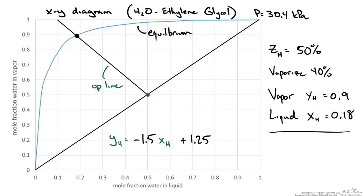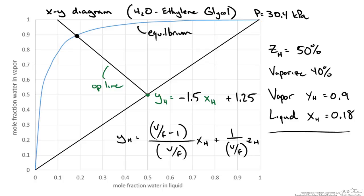Note the minimum and maximum slopes of this operating line. At the dew point we have essentially all saturated vapor; V/F equals 1 giving a slope of 0, producing a horizontal line. In that case our liquid composition would be less than 0.05 and the vapor composition would be roughly 0.5, close to what we fed into the tank.